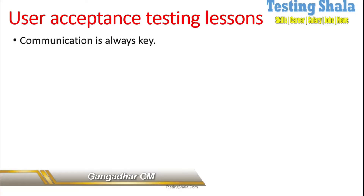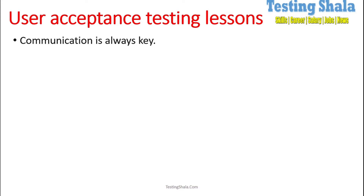What are the lessons learned as part of user acceptance testing? The first and very crucial thing when performing user acceptance testing is communication. Get with all the stakeholders to have the right information for your test preparation, test execution, and test results publishing. Everything should have the right communication.